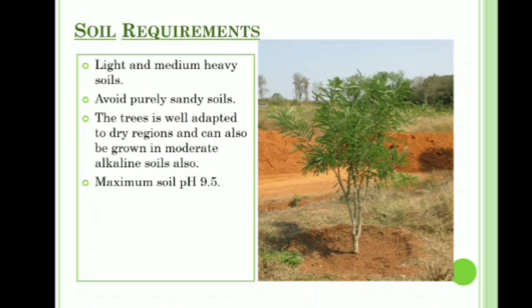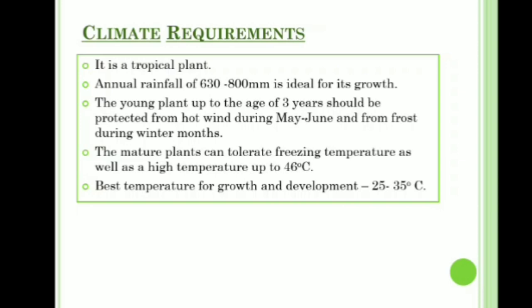Climate requirements: Amla is a tropical plant that needs annual rainfall of about 630 to 800 mm for ideal growth. Young plants up to age three years should be protected from hot winds during May–June and from frost during winter months. Mature plants can tolerate freezing temperatures as well as high temperatures up to 46 degrees Celsius. Best temperature for growth and development is 25 to 35 degrees Celsius.